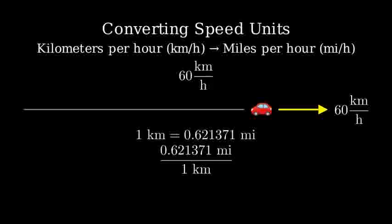We can write this as a fraction with miles in the numerator and kilometers in the denominator. This way, when we multiply by this fraction, the kilometers will cancel out, leaving us with miles.